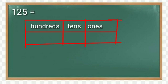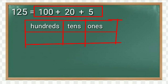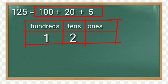The number was 125. We will write it as 100 plus 20 plus 5. Now we will write it in the given table. How many hundreds were there? One. So we will write here one. And how many tens are there? Two. So we will write here two. And how many ones are there? Five. So we will write here five.